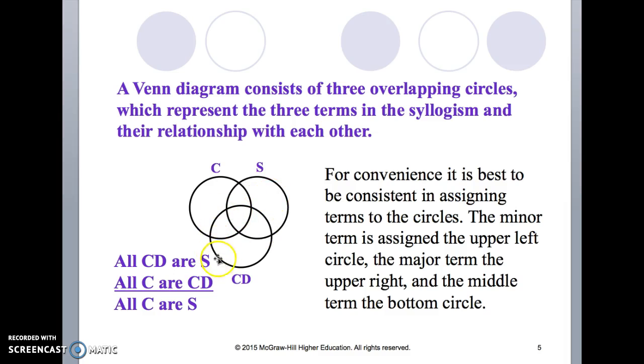The circle that hangs down a bit we assign as the middle term circle and you can see it's labeled CD, C, S, and CD. That's the next step.